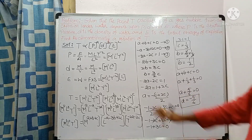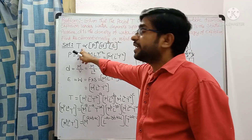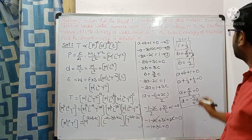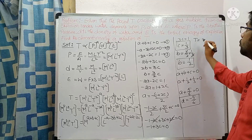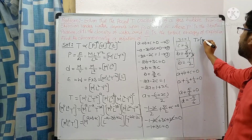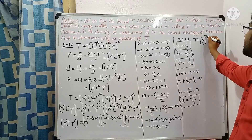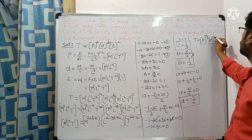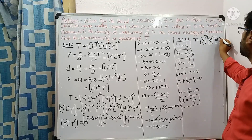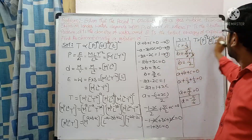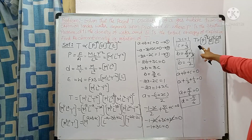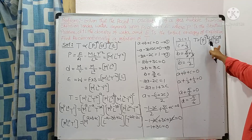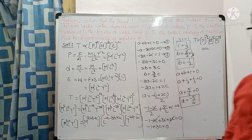Now substituting a, b, c values into the relation: T equals p to the power of minus 5/6, multiplied by d to the power of 1/2, multiplied by e to the power of 1/3. This is the dimensional relation of T in terms of pressure, density, and energy. Thank you, students.